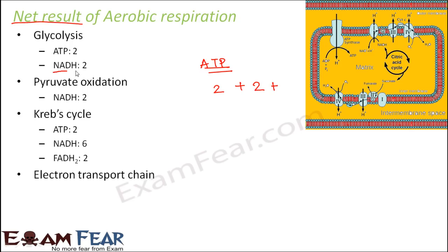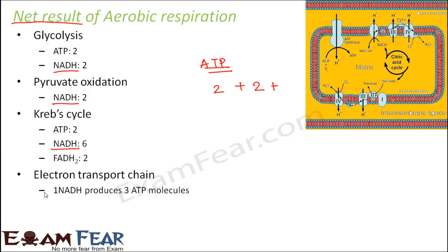Now these NADH all got converted into ATP during the electron transport chain. In the electron transport chain, we saw that 1 NADH could produce 3 ATP molecules. However, the NADH which were produced during glycolysis — these NADH were produced in the cytoplasm.